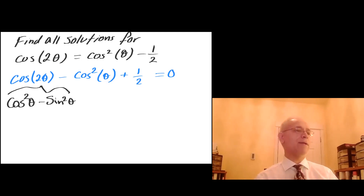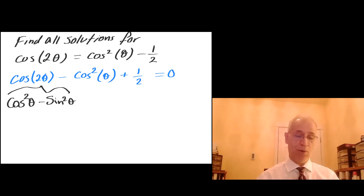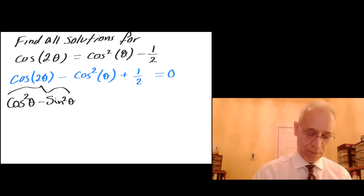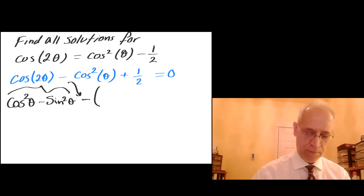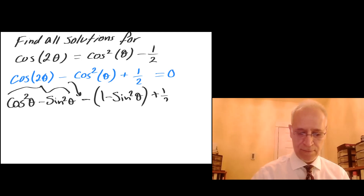And I know that I can exchange cosine squared of theta with one minus sine squared of theta. So here's my minus, then parenthesis one minus sine squared of theta, plus one half, equals zero.